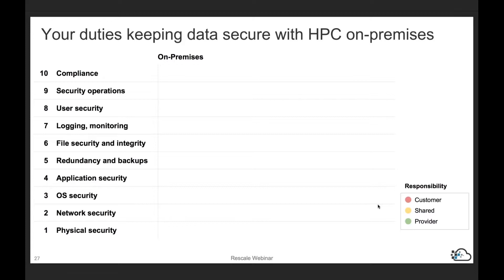If you run an on-premises system, for physical security you're on your own — you have to source your own data center and make sure everything around it is protected. For network security, you have to perform your own network install, firewall setup, configuration, and use them correctly. If you have higher-level requirements such as isolation, you have to make sure those are done properly as well.